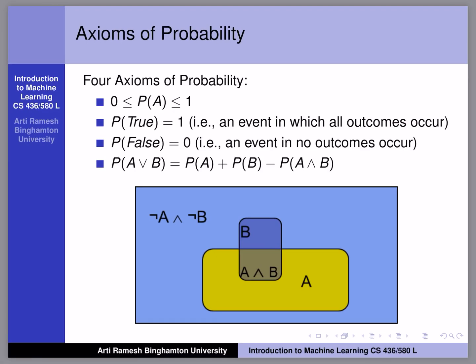There are four axioms of probability. The first and most common one is that probability always has a value between zero and one. The next two are: probability of true is one, and probability of false is zero. Probability of true doesn't mean any event where a random variable is true — it means an event in which all the outcomes occur.